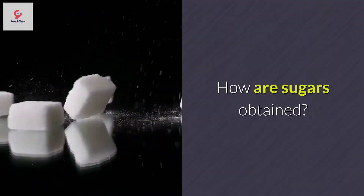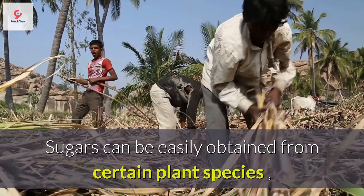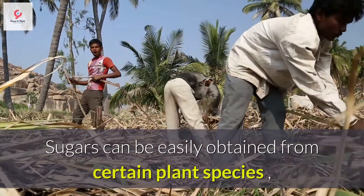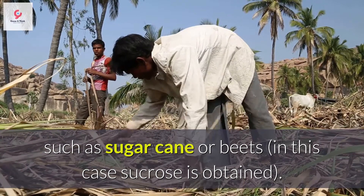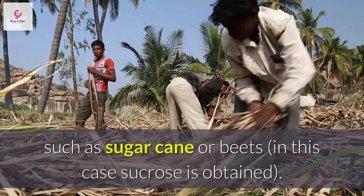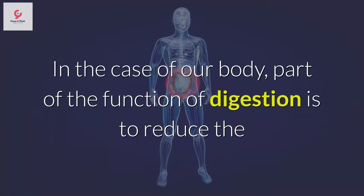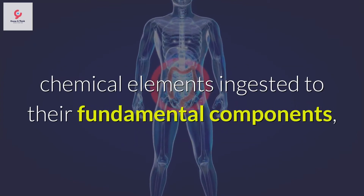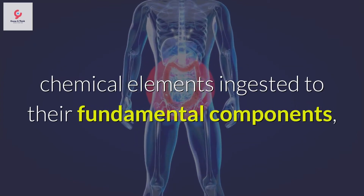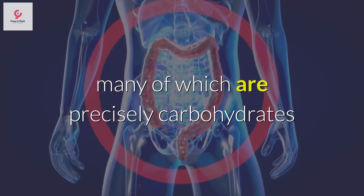How are sugars obtained? Sugars can be easily obtained from certain plant species, such as sugarcane or beets — in this case sucrose is obtained. In the case of our body, part of the function of digestion is to reduce the chemical elements ingested to their fundamental components, many of which are precisely carbohydrates.